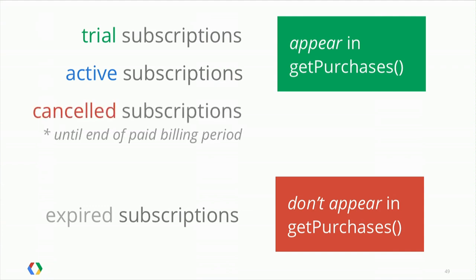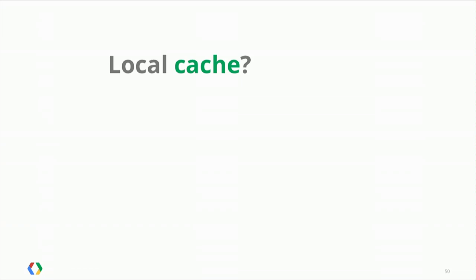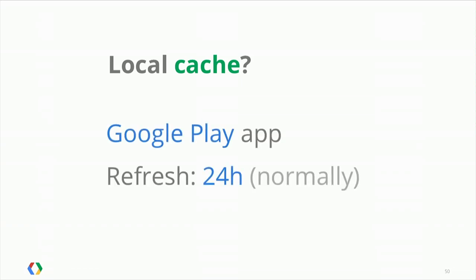For canceled subscriptions, canceled subscriptions will appear in getPurchases until the end of the billing period the user has paid for — then they cease to appear. So as far as the developer is concerned, all you have to do is check if it's in getPurchases. Note that because Google Play has a local cache on the client, when a subscription expires it might take some time — usually no more than 24 hours — before it disappears from getPurchases. That cache is refreshed every 24 hours at most, so you might briefly see an already-expired subscription.